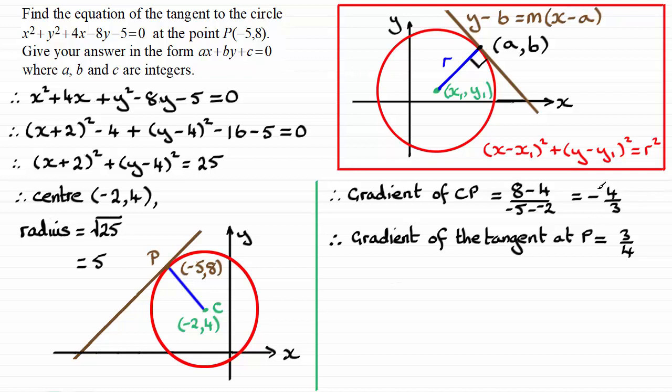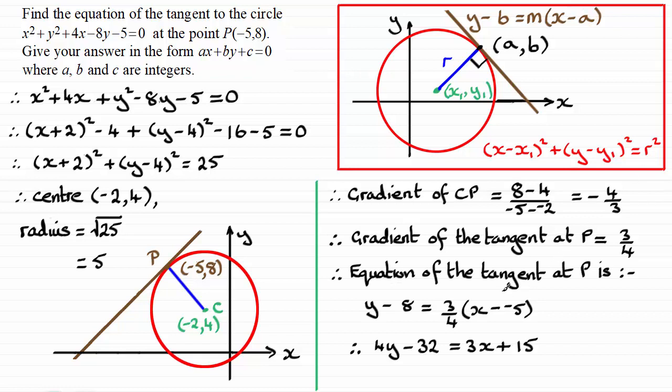And now that I've got the gradient of the tangent, I can now use this form of the equation of the straight line. So, if I do that, I'm going to get the equation of the tangent at P is y minus the y-coordinate at P, which is the 8, equals the gradient of the tangent, which we've seen is 3 quarters, all multiplied by x minus the x-coordinate at P, minus 5.